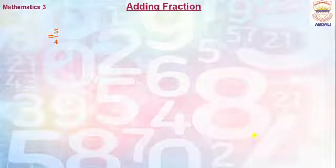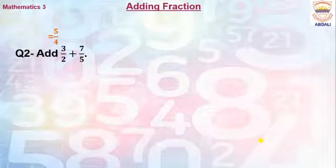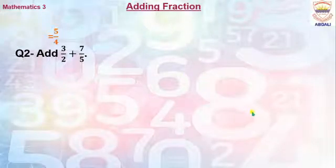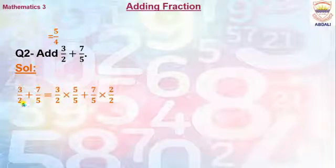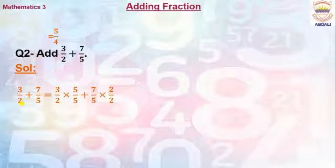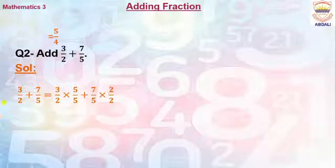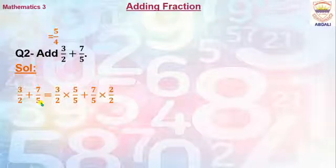Now let's take another example: Add 3/2 plus 7/5. Here you can see the denominators are 2 and 5. Let's recall the table of 2 — can you find 5 in the table of 2? No. Now let's recall the table of 5 — can you find the number 2 in the table of 5? No.